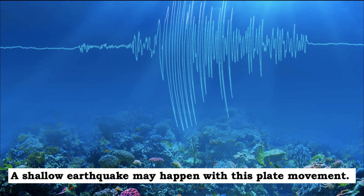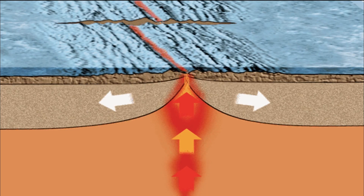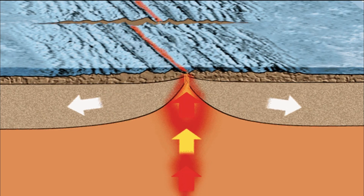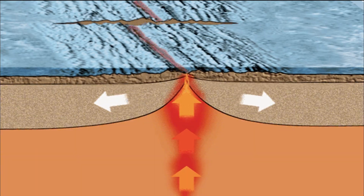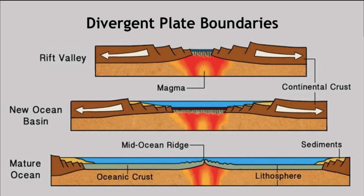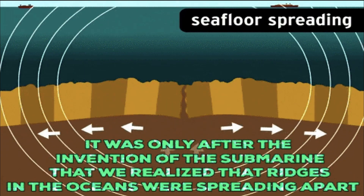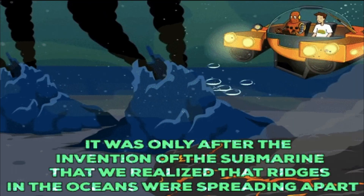Plate divergence is believed to be a slow, continuous process. As the plates move away, the gap between them increases. Materials from the mantle may rise, filling up the space. These materials pile up near the tension zone, forming mountain-like structures called oceanic ridges. The filled-up space between the plates becomes a new seafloor. This process is known as seafloor spreading.